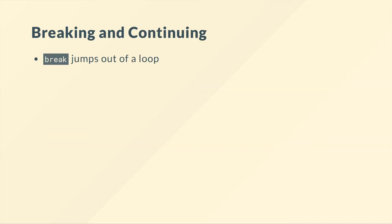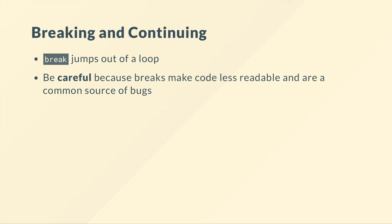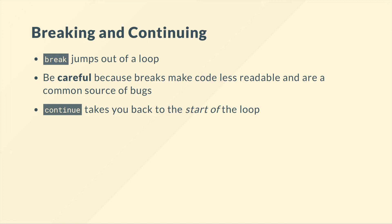Breaking and continuing: sometimes we need to use break to jump out of a loop, but we need to be careful. With nested loops, you have to remember you're only breaking out of the current loop — this is a very common source of bugs. Continue takes you back to the start of the loop, which can be confusing since you'd assume it doesn't really do anything. But if you see continue, it goes back to the start of the loop you're in. With nested loops, break and continue only act on the loop they were called in.